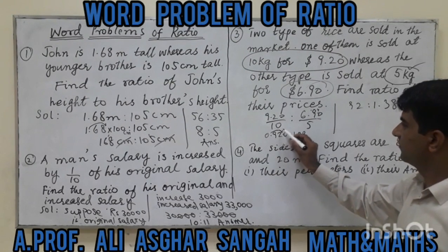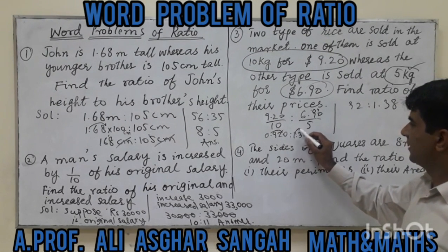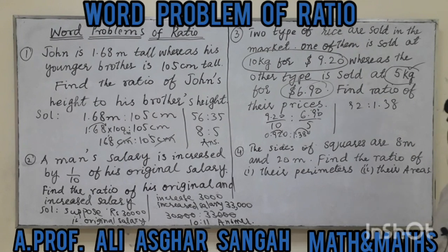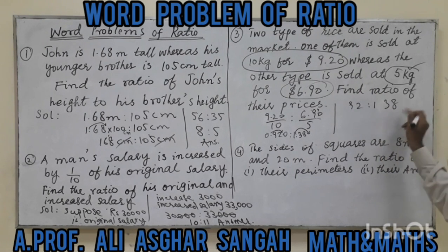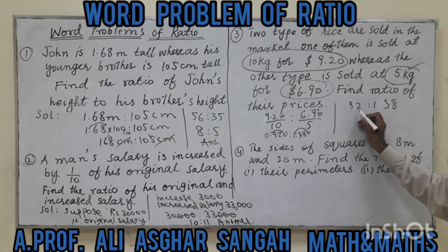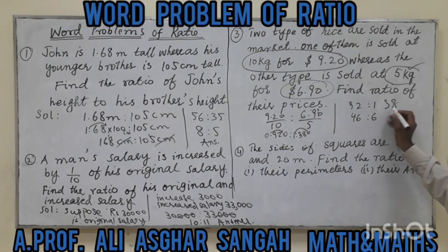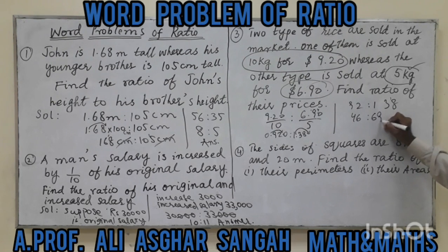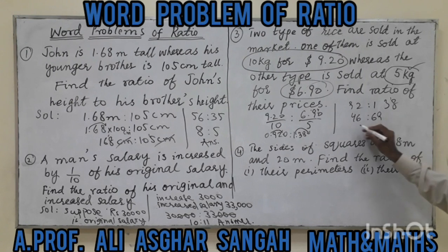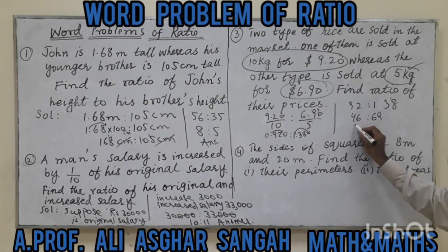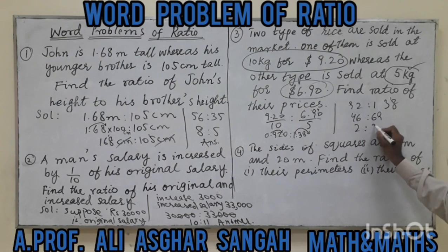After simplifying the ratio from the table, we arrive at the final answer for question number 3.